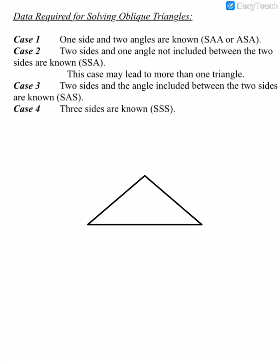The data required for solving an oblique triangle can be case one, where we know a side and two angles. If we knew a side and two angles where the side is not included, that's called side-angle-angle. Or if we knew an angle, the side between it and another angle, that's called angle-side-angle. Case two is when we know two sides and an angle that's not included — side-side-angle. This case can lead to more than one triangle, and we'll talk about that in another lesson.